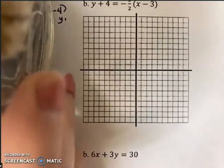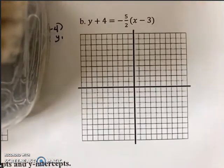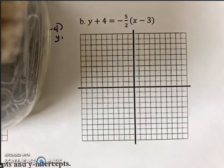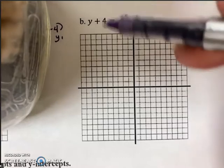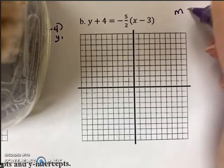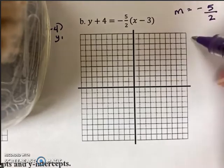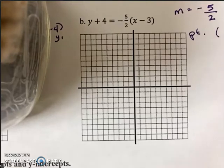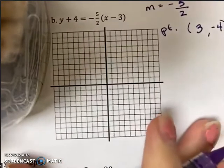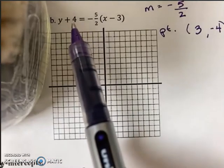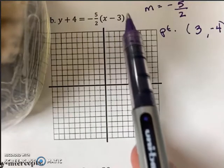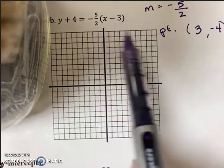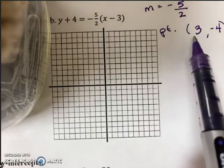Part B. If you feel comfortable enough attempting this on your own, you go for it. For those of you who are still struggling a little bit, go ahead and follow along. Once again, with graphing, I'm going to analyze my information first. Looking at this, I can see my slope is a negative 5 halves. And my point will be 3, negative 4. My point is 3, negative 4 because here's my y₁. So y minus a negative 4 would give me y plus 4. And then here's my x₁. x minus a positive 3 would give me the expression x minus 3.